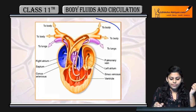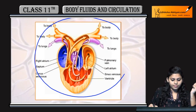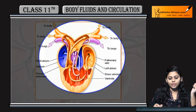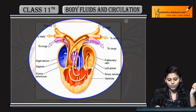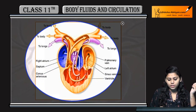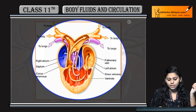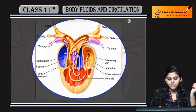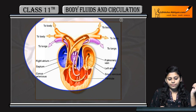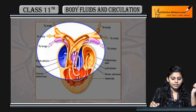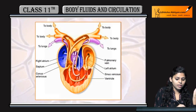In the amphibian heart, oxygenated and deoxygenated blood mix to some extent in the ventricle. The amphibian heart has 2 auricles and 1 ventricle, with conus arteriosus and sinus venosus also present.